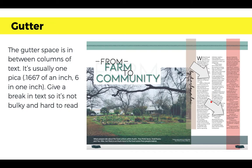Gutter space is the space between the columns of text. Gutter space tends to be one pica, which is 0.1667 of an inch. It gives us a break in the text — if all the text were one big block of copy, that'd be really hard to read. It's much easier when we break up text into columns so you can read all the way down and know where to start back up.